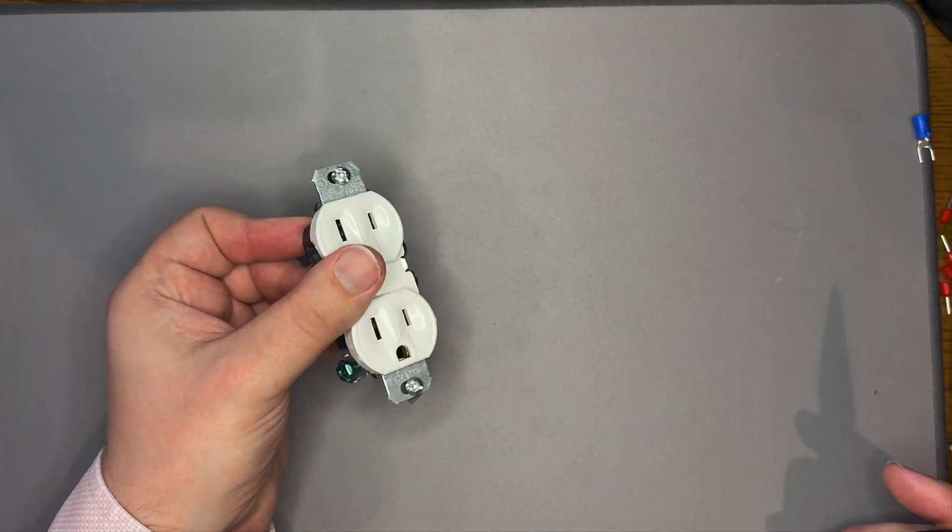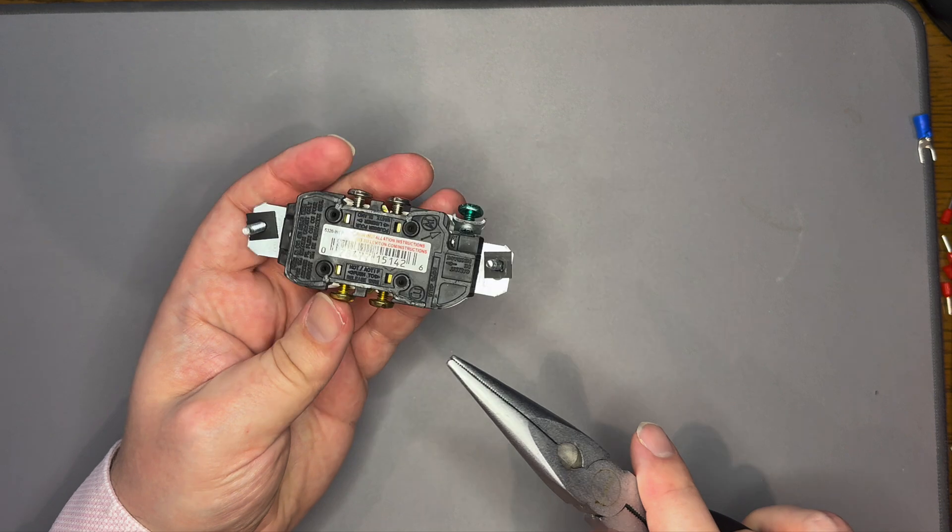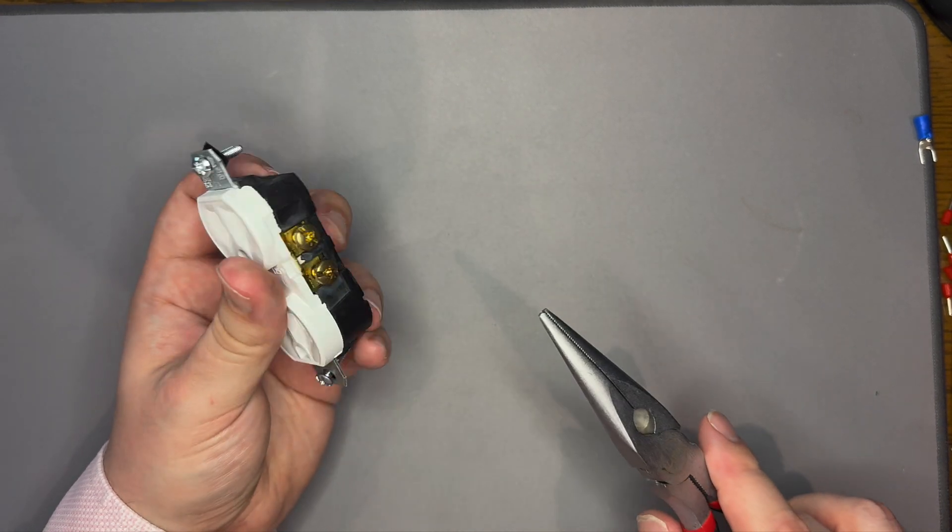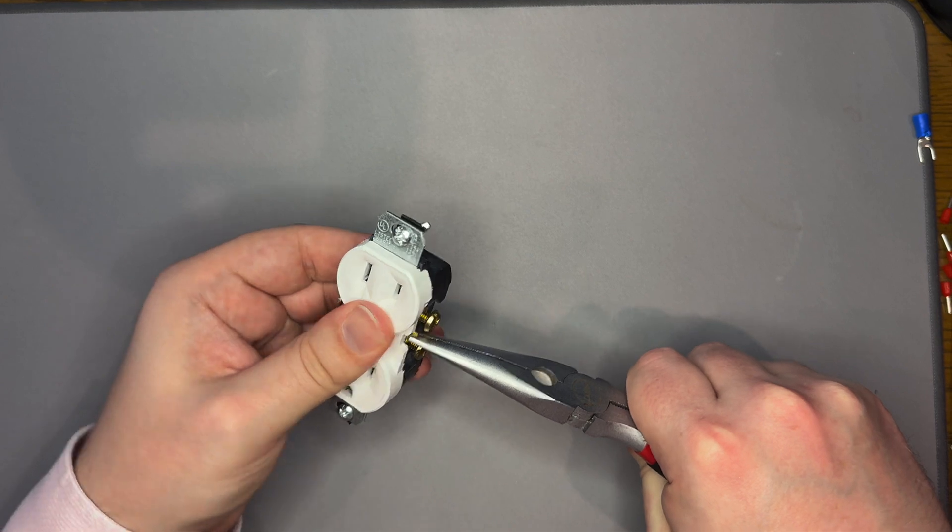Next, we will separate the hot terminals for the top and bottom outlet. The hot terminals, on the right side, are connected with a metal tab. Using pliers, grab this tab and bend until it breaks off.